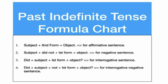Now the chart of Past Indefinite Tense. For simple sentences: Subject + second form of verb + object. For negative sentences: Subject + did not + first form of verb + object. For interrogative sentences: Did + subject + first form of verb + object + question mark. For interrogative negative sentences: Did + subject + not + first form of verb + object + question mark. This is a very simple formula chart.